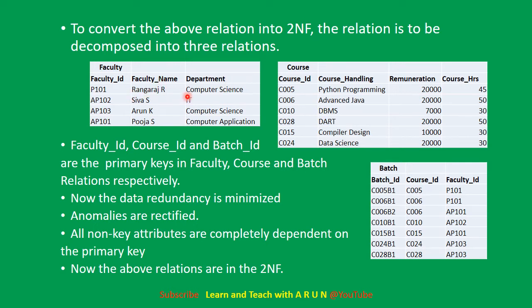Faculty name and department are non-key attributes dependent on faculty ID. In the course table, course ID is the primary key and course-related attributes are non-key attributes. In a third table, batch ID is the primary key, and faculty ID and course ID serve as foreign keys to reference the other tables.